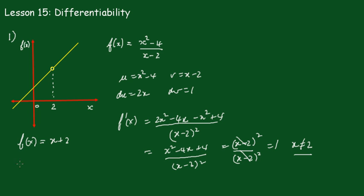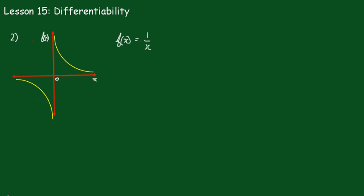Now in the previous lesson we showed this function is not continuous at x equals zero, and obviously we can see that it's not going to be differentiable either because we simply can't draw a tangent at that particular point.